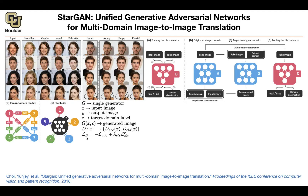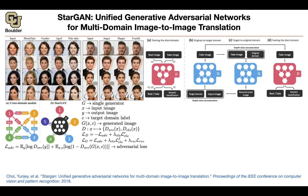The loss of the discriminator comes from an adversarial loss plus a classification loss. The generator has an adversarial loss, a classification loss, and a reconstruction loss. The adversarial loss comes from the output of your discriminator discriminating between real and fake — there is a sigmoid here. For the domain classification, you have a softmax at the end, and you're maximizing the log-likelihood. For real images, you know the corresponding class. For fake images, you also know the corresponding class.